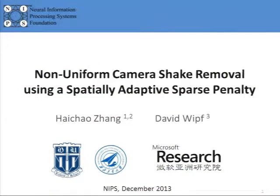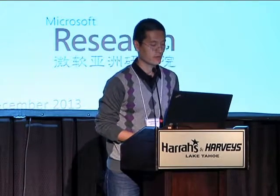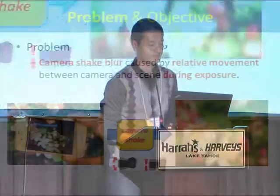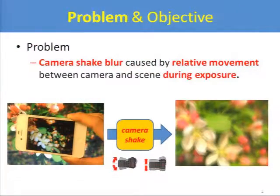The next speaker is Hai Chao Zhang, who will talk about non-uniform camera shake removal using a spatially adaptive sparse penalty. The problem considered is camera shake blur, caused by relative movement between the camera and scene during the exposure period. The objective is to recover the sharp image from a single blurry observation with unknown camera shake.